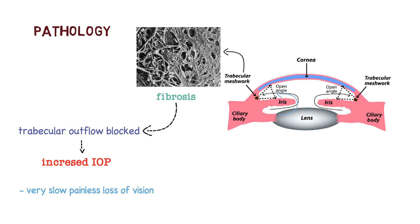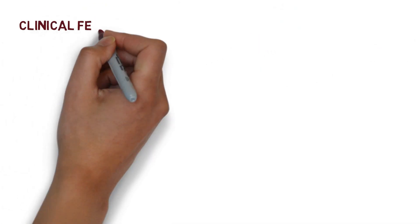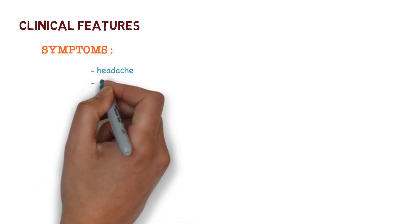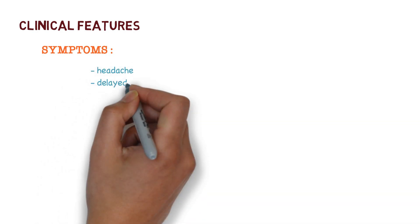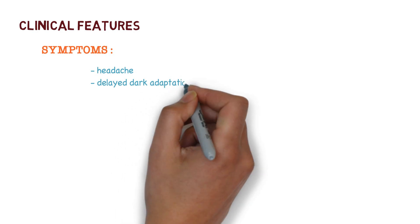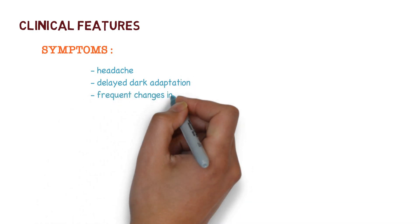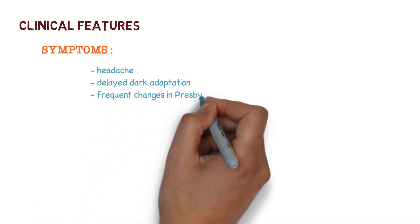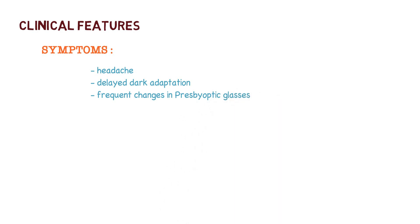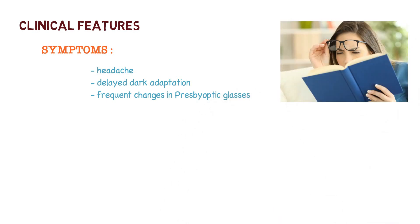Let's talk about the clinical features. The symptoms include headache, because there is high intraocular pressure. There may be delayed dark adaptation, and there can be frequent changes in presbyopic glasses. These are the classical symptoms of this condition.